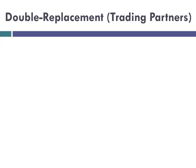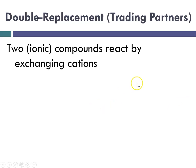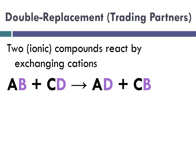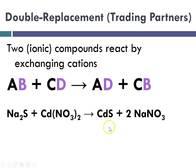Double replacement, or double displacement, is kind of like trading partners. Two ionic compounds react and exchange cations: AB plus CD yields AD and CB. It's like a square dance where you change partners. My example is sodium sulfide plus cadmium(II) nitrate reacting to produce cadmium(II) sulfide and two sodium nitrates.